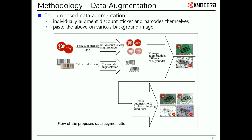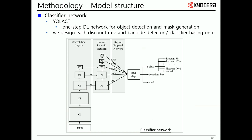The proposed data augmentation is mainly composed of three steps. We first individually augment discount stickers and buckles themselves by applying computer vision processes to generate a variety of data close to the real-world states. We then paste the generated discount stickers or buckles onto various background images, such as product packaging. We next augment the images containing the augmented discount stickers or buckles to bring them closer to the actual shooting environment.